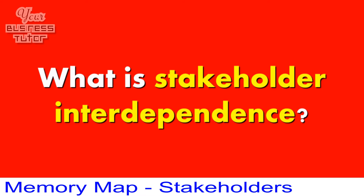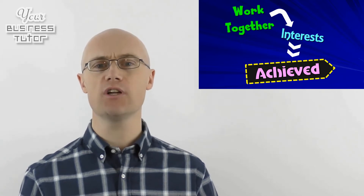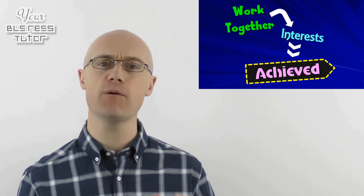So what is stakeholder interdependence? Stakeholder interdependence occurs when the interests of different stakeholders complement each other. In other words, the actions of each stakeholder help the other achieve their interests. By cooperating with each other or working together, each stakeholder will achieve what they are interested in obtaining from the business. This is most likely to occur when one stakeholder wants to achieve something and needs the help of another stakeholder to do this. Successful cooperation usually occurs when one stakeholder can offer or incentivize the other to do what they want.